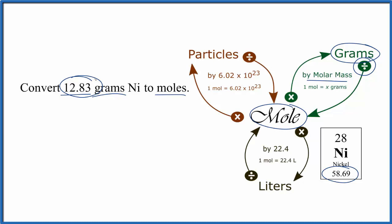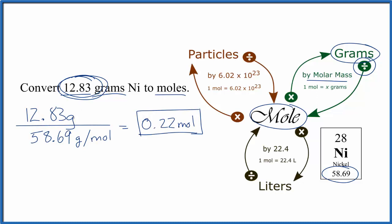So when we set it up we divide what we're given by the atomic mass here. That looks like this. So we divide the given by the atomic mass of nickel. Grams on the top and bottom, that cancels out. We're left with 0.22 moles of nickel.